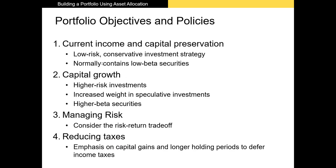In terms of portfolio objectives, the two most common are current income and capital preservation. A lot of funds — particularly low-risk funds — are going to offer some level of current income, in the form of dividends or coupons on bonds. These funds are generally lower risk, with lower betas, and invest in securities with higher credit ratings or lower cost of equity. For example, Apple pays a dividend, so investors desiring current income are more desirous of Apple stock than a pharmaceutical startup or speculative firm.